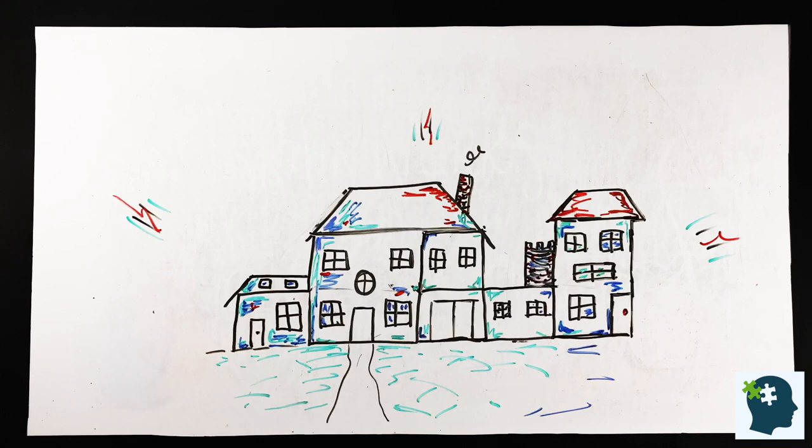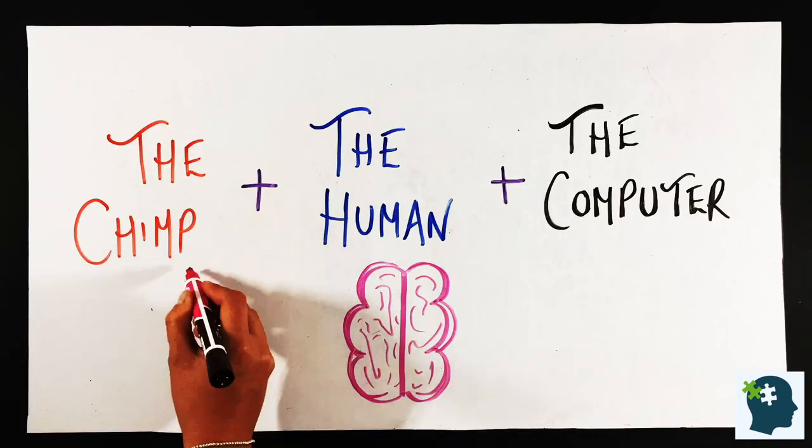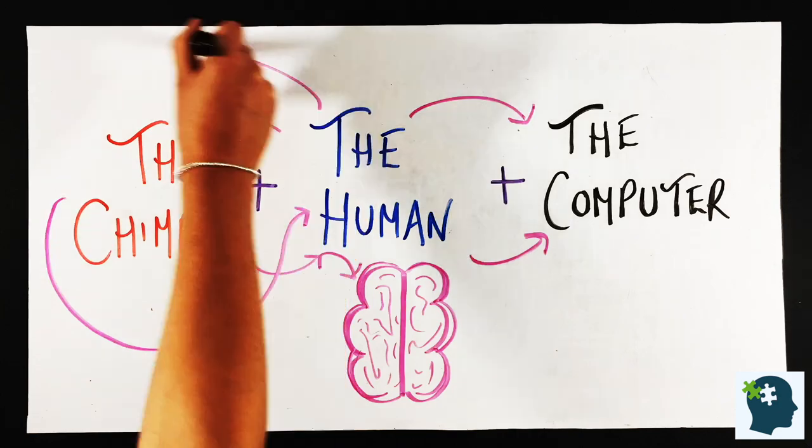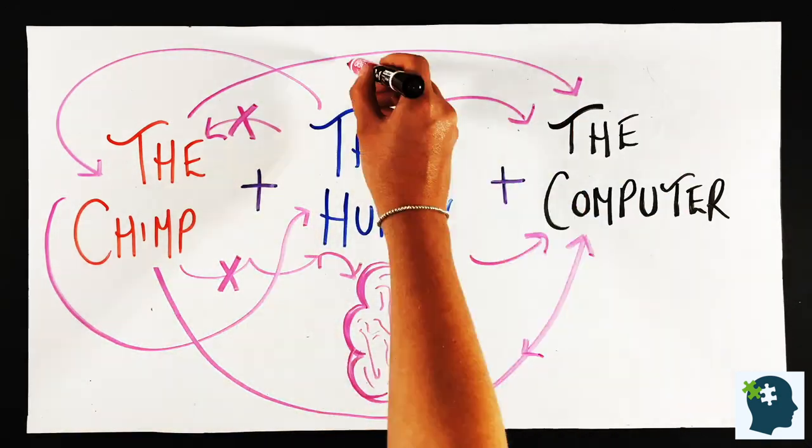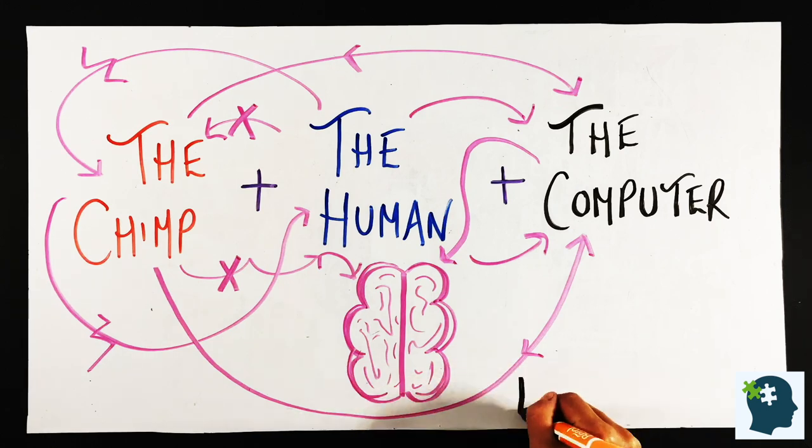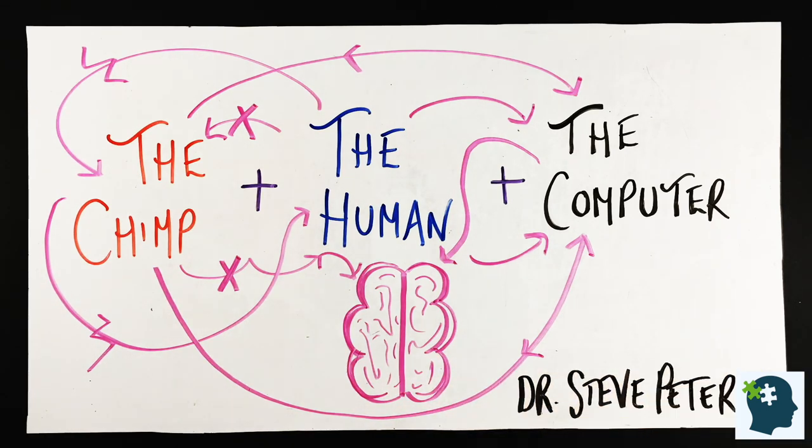Instead of a big house, think of it more as a little bungalow that's had extensions and new parts added to it over the years. Dr. Steve Peters created this model to help us understand how these areas of our mind work together, or how sometimes they don't, and how this determines our thoughts, feelings and actions.